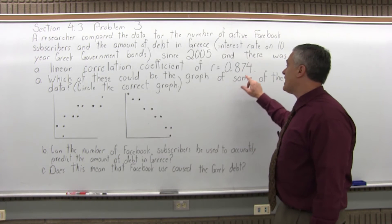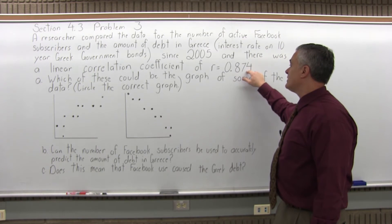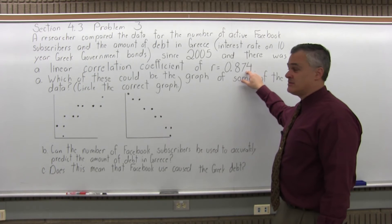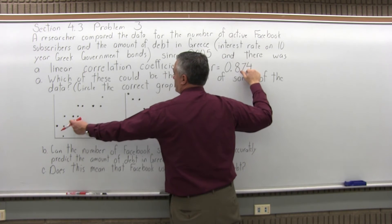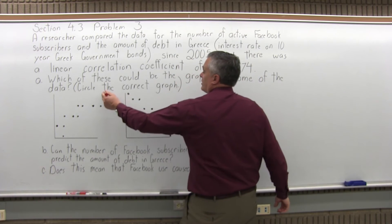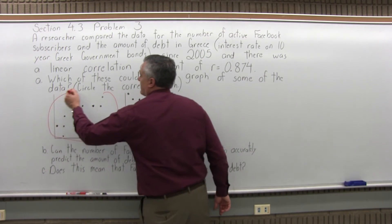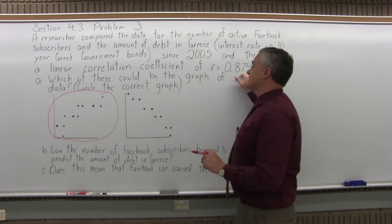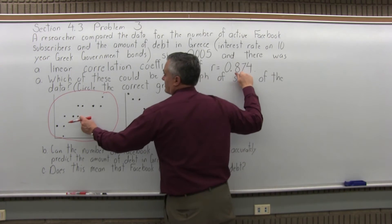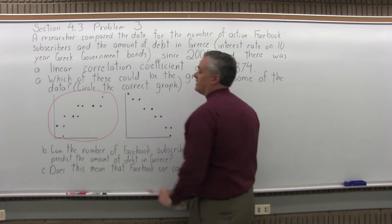Now, since the value of our correlation coefficient is positive, that would indicate that the data points should go up as we go from left to right. So the graph that could be the graph of some of the data is the first one, because of the positive value of r and the fact that the points go up as we go from left to right.